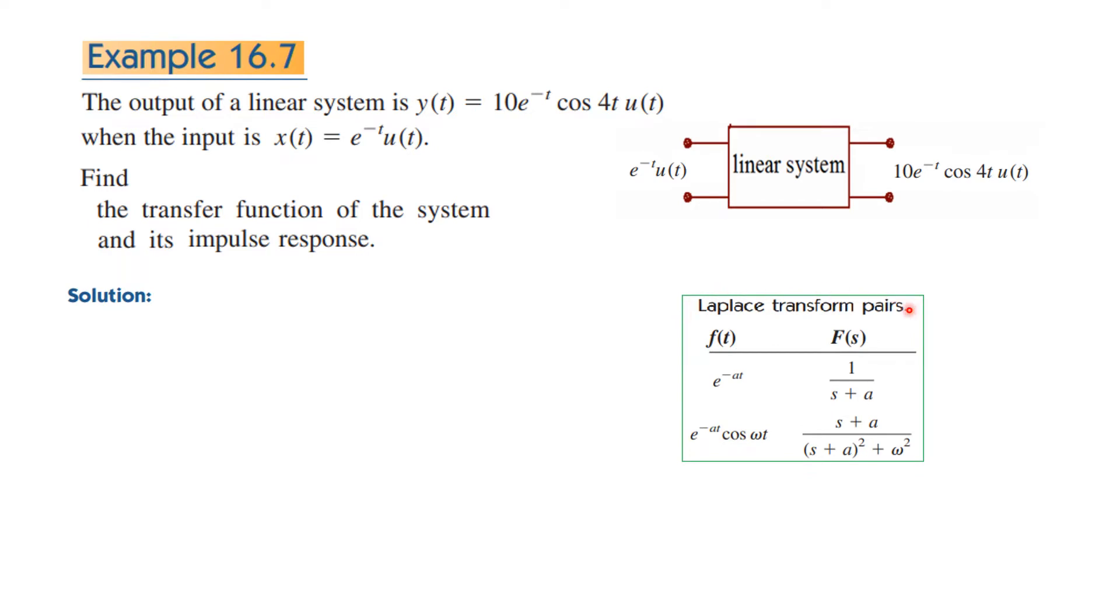Now we will take help of this Laplace table which is given in chapter 15 of the book, and using this we will convert these time domain inputs into s domain or the Laplace domain. So if x(t) is e^(-t), then X(s) will be 1 over (s+1) using this formula. And if y(t) is 10e^t cos 4t, then Y(s) will be, using this formula, 10(s+1) over ((s+1)^2 + 4^2). So I hope you can compare the two and write this one.